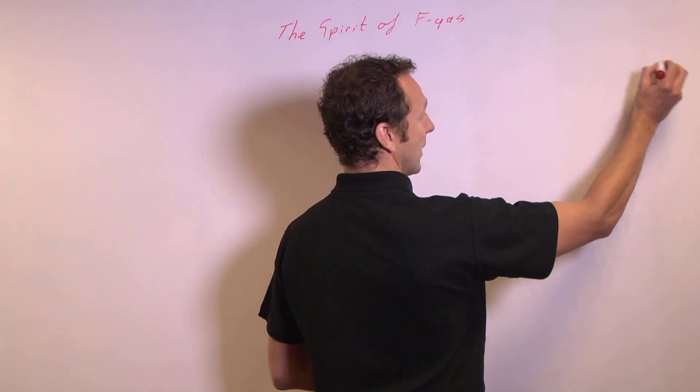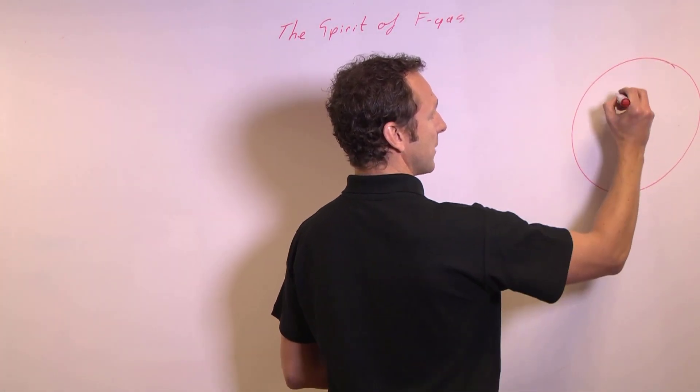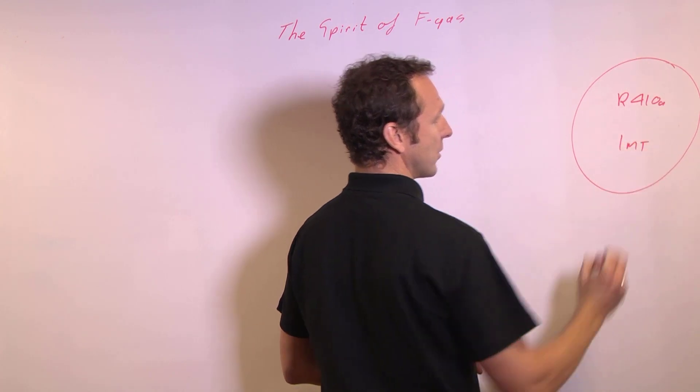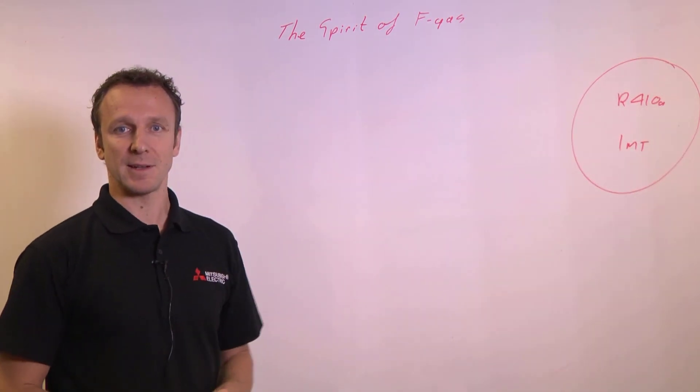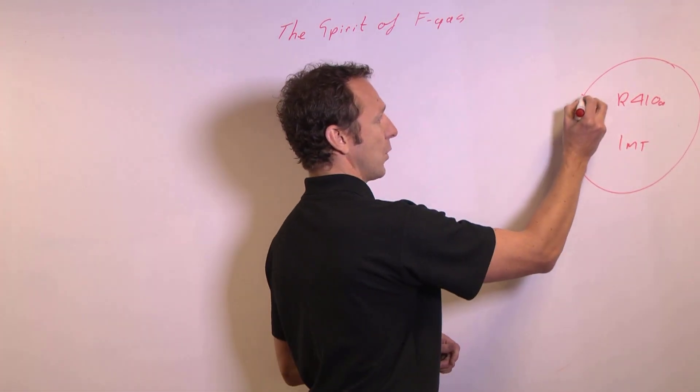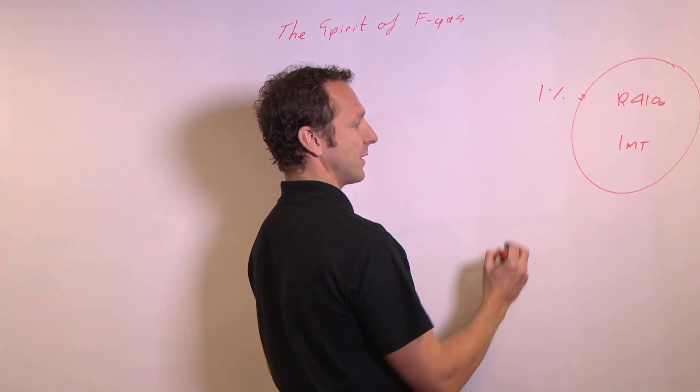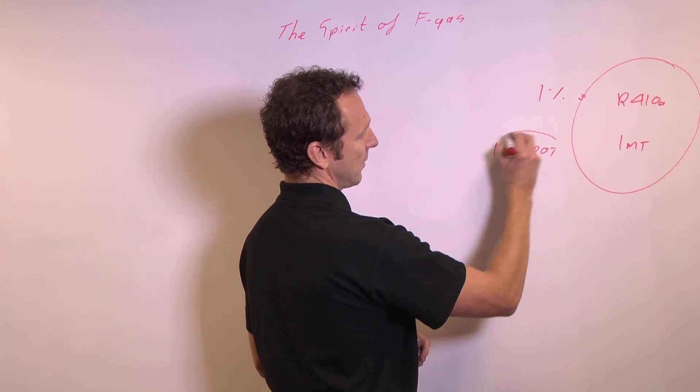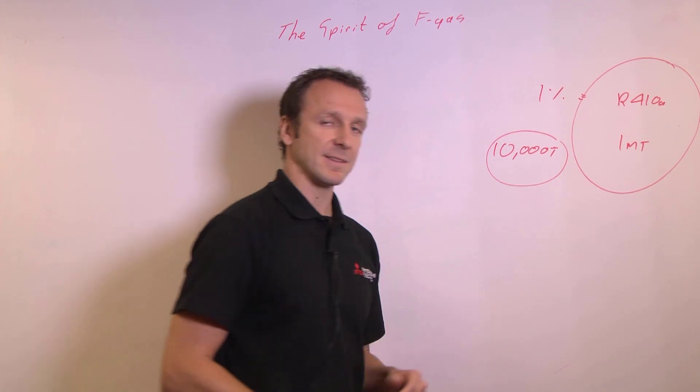My first bubble is a representation of the UK market using R410A, and I'm going to assume one million tonnes of refrigerant out in hermetically sealed systems in the market. I'm also going to assume a 1% leakage rate, which gives me 10,000 tonnes of R410A being released into the atmosphere.